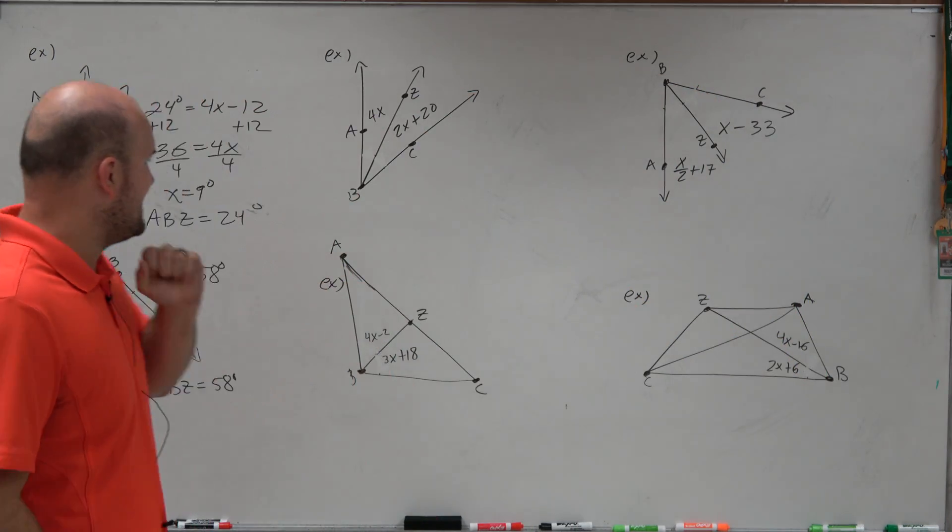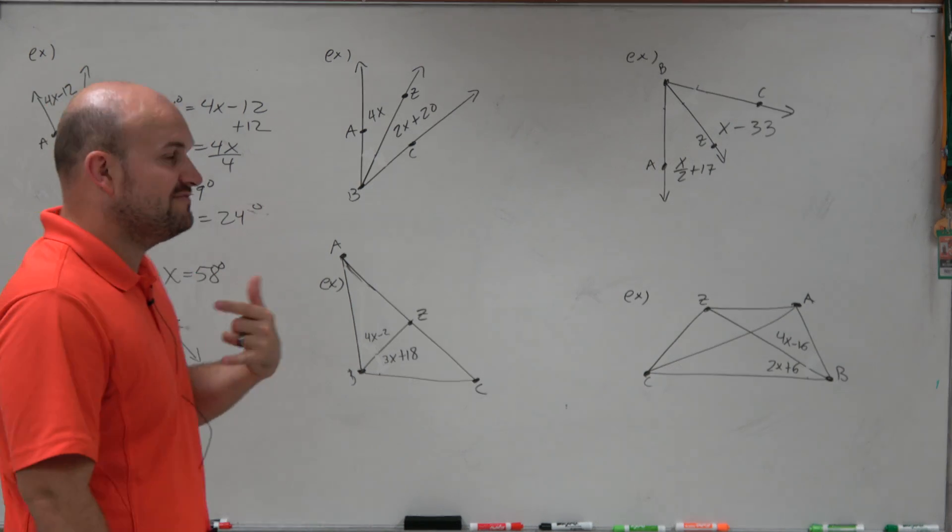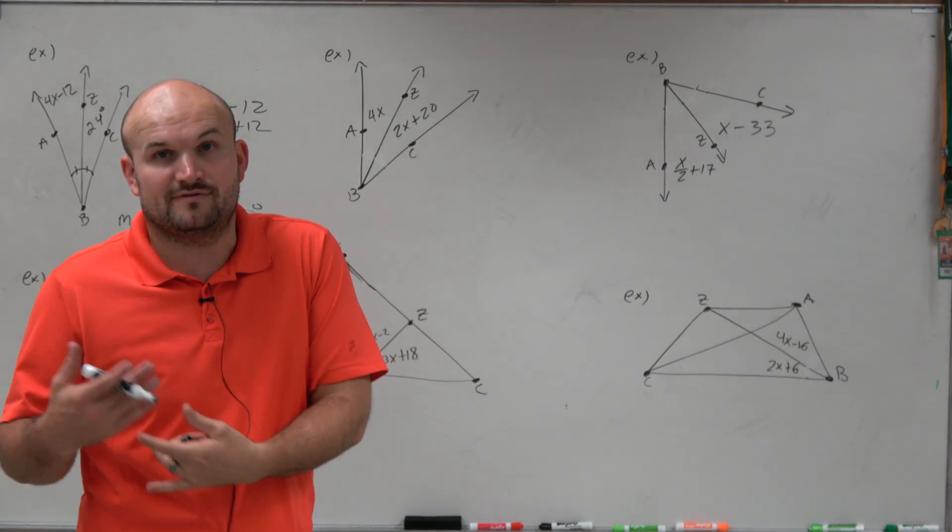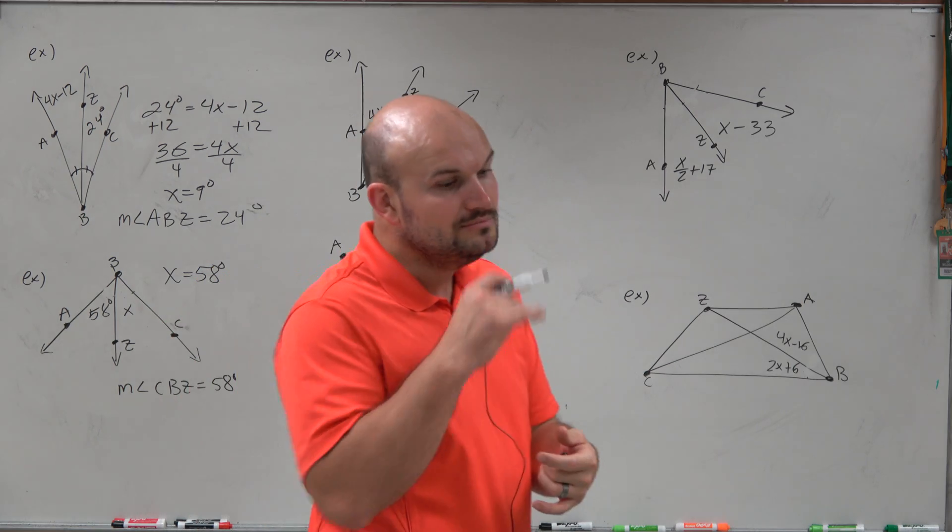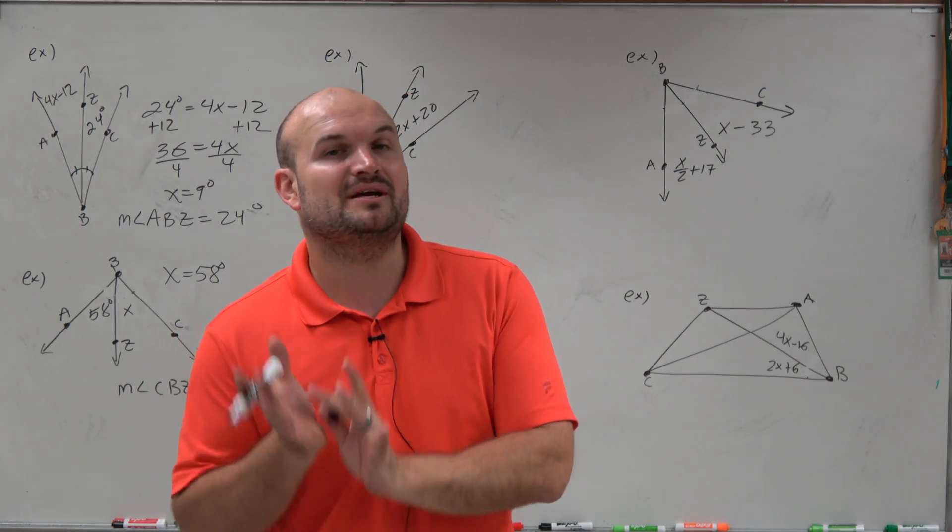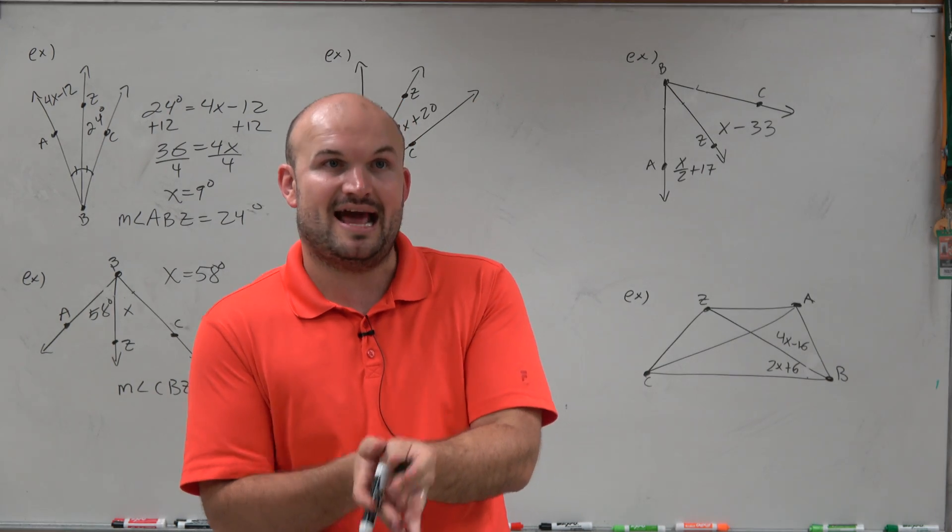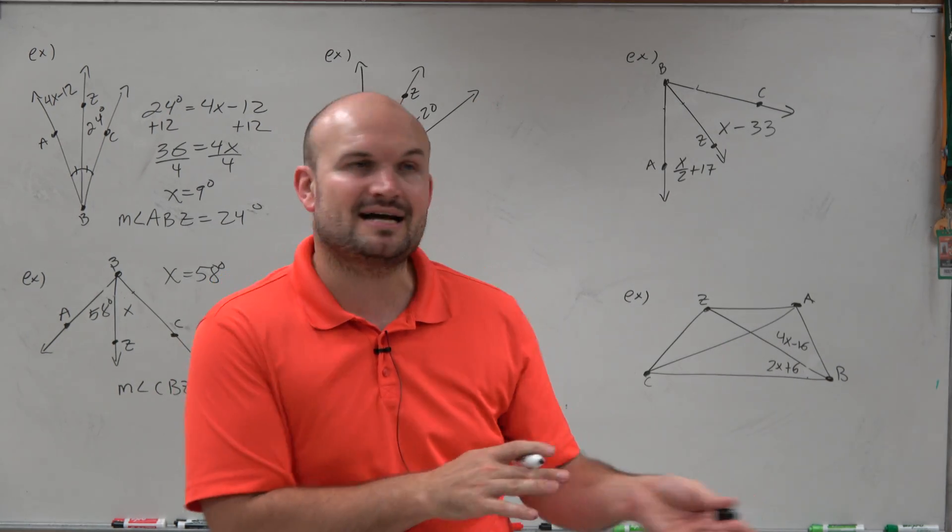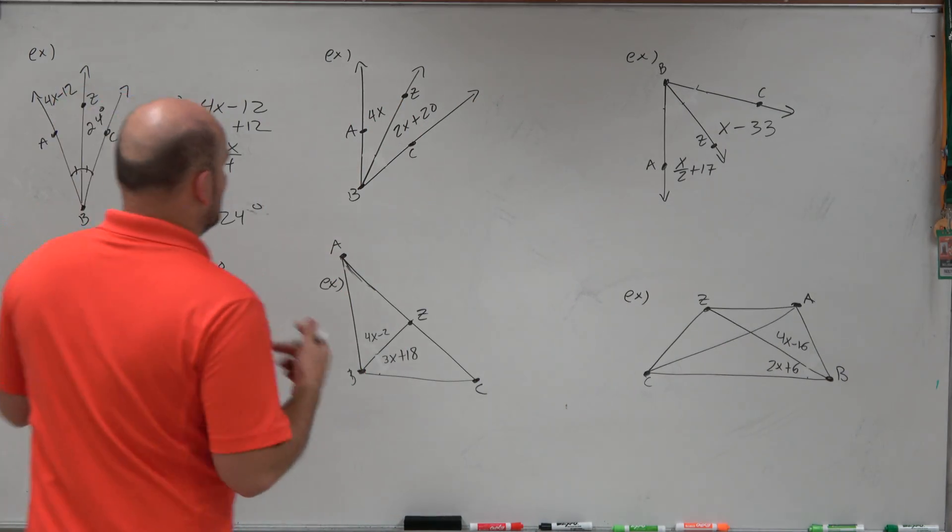But for the rest of these problems, it's not as obvious as far as what is the value of x, and therefore, what is the value of the equation or the angle. But remember, all we got to do is figure out what the measure is of one angle because the angle bisector, we know, cuts it in half. So the other angle is going to be exactly the same as well. So let's go ahead and set up our equation.